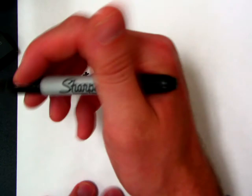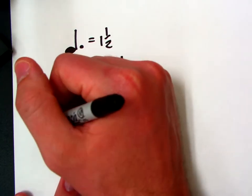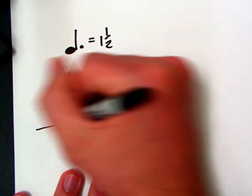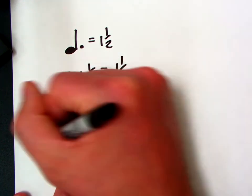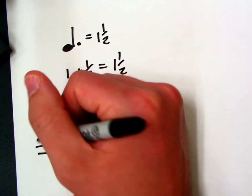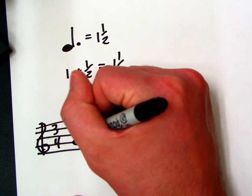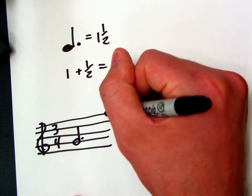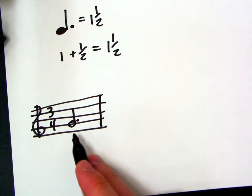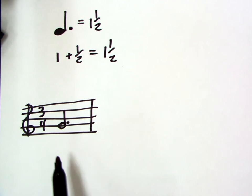Now, the trick here, in the last lesson, you probably noticed that I flubbed a little bit. If we draw a staff, and we're in three-four time. So, clef, three-four. And we want to put a dotted half note somewhere.